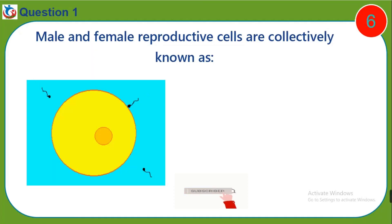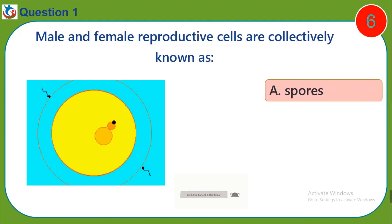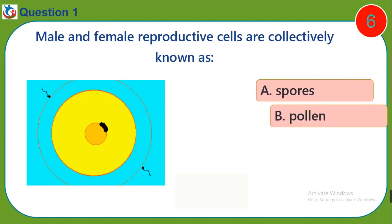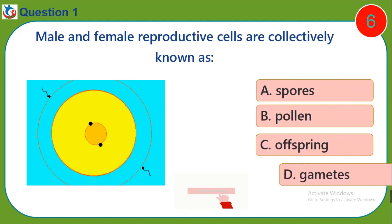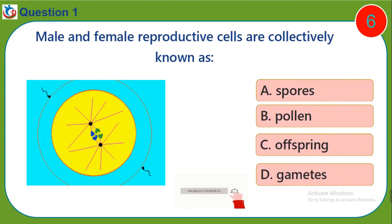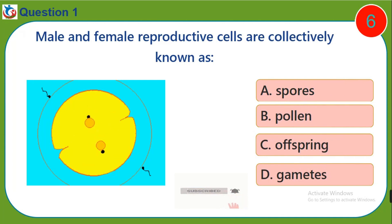Question one: Male and female reproductive cells are collectively known as — a) spurs, b) bowling, c) offspring, d) gametes.